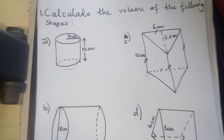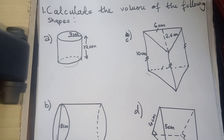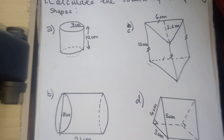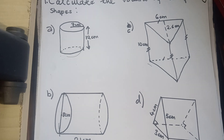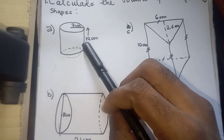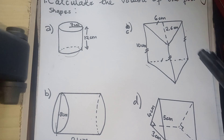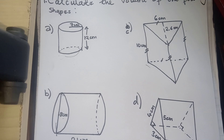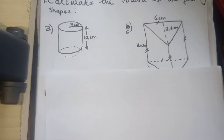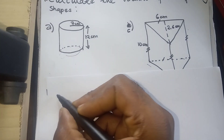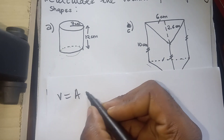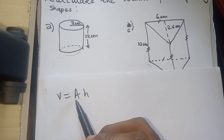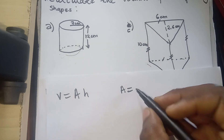Calculate the volume of the following shapes. To calculate the volume of any given shape, you don't need to know whether it's open or closed. All you need to know is the radius and the height for cylinders, and then the base area and the height. To find the volume of this shape, you can say V is equal to base area times height. If you decide to do it like this, you can find the base area separately.